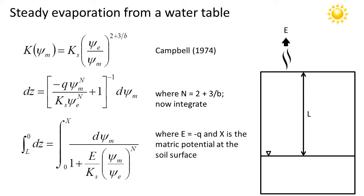The integral on the left-hand side is simple. We just integrate from L, the water table depth, up to 0, the soil surface. On the right-hand side we're integrating from the matrix potential at the water table, which is 0 by definition, to X, which is the matrix potential at the soil surface. Notice that I've replaced negative q with E because E is a positive soil water flux that's upward.